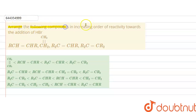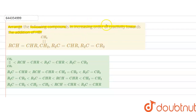Hello students. The question is: arrange the following compounds in increasing order of reactivity towards the addition of HBr. We are given four alkenes and we have to find the increasing order of reactivity towards addition of HBr.